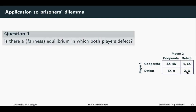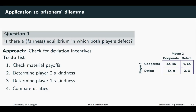Now we want to apply the intention-based model by Rabin. The first question we want to ask is if there is a fairness equilibrium. A fairness equilibrium is how the equilibria of the intention-based models are denoted, in which both players defect. We check if players have deviation incentives from this equilibrium. We assume that both players are playing defecting and then see if they have an individual incentive to deviate. So let us write down the to-do list.